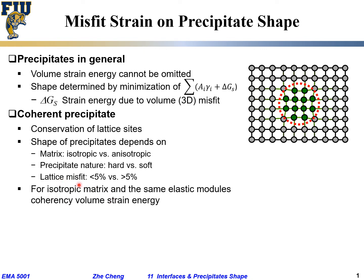If we are dealing with a so-called isotropic matrix — which means quite often for cubic, along different directions they look pretty much the same — with the same elastic modulus and coherent volume strain, the volume strain term, the three-dimensional term, would just be a constant times misfit times the total volume of the precipitate. Which means the larger the volume of the precipitate, the larger the total volume strain energy.